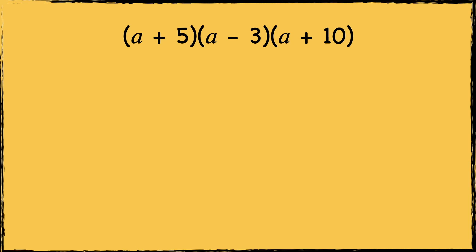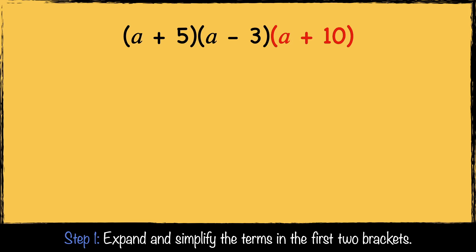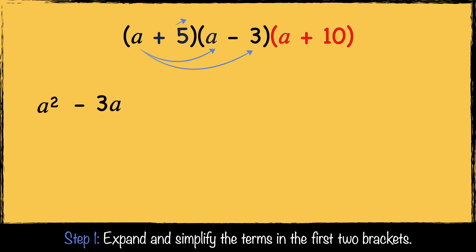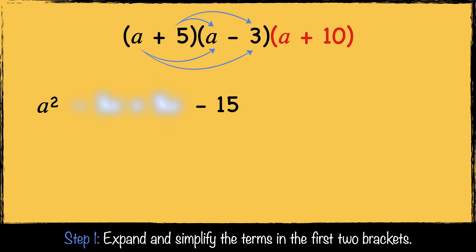Here's the first example. Let's start with step one — we're going to expand and simplify the terms in the first two brackets. a multiplied by a is a squared. a multiplied by minus 3 is minus 3a. Next we multiply 5 by a, which is 5a. Then 5 multiplied by minus 3 gives us minus 15. Now we simplify by combining the like terms: minus 3a and 5a combine to get 2a.